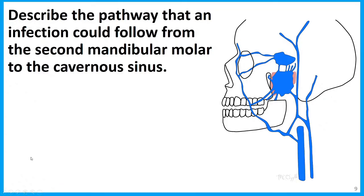Take a second to write down your answer to this: I'd like you to describe a pathway that an infection could follow from the second mandibular molar to the cavernous sinus. I'll pause for a moment here, and when you're ready, let's talk about it. We'll start here with the second mandibular molar. So what vein will drain that? The vein that will carry blood away from the teeth will be the inferior alveolar vein. So that's the one we're seeing right here — that's our first step.